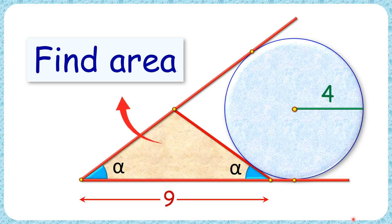Welcome to this interesting question where a circle is given with radius 4 centimeters. These are the three tangents to the circle which together are forming an isosceles triangle. The base length of this triangle is 9 centimeters. The exciting part is that with this limited data we have to find the area of this triangle.